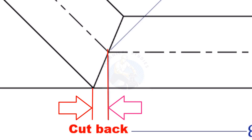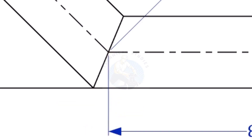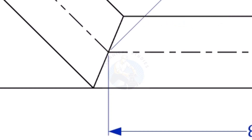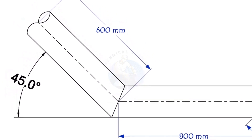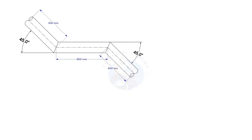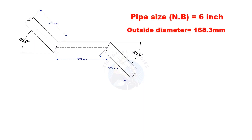To mark a miter cut, we need to know the cutback of the miter. In this offset, the nominal diameter of the pipe is 6 inch. The angle of the miter is 45 degrees. This method is suitable for cutback of any degree. The outside diameter of a 6 inch pipe is 168.3 millimeters.